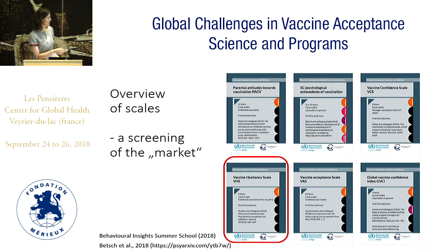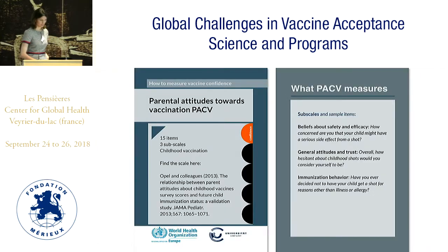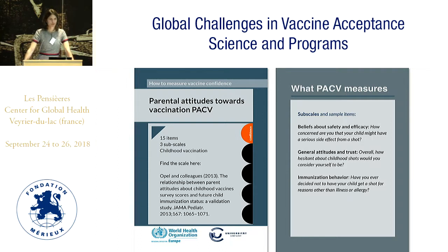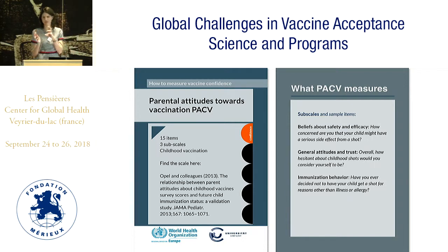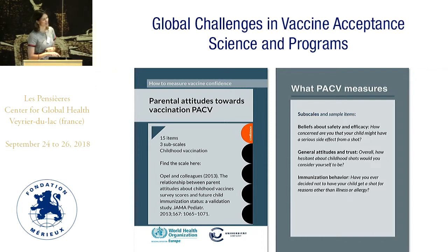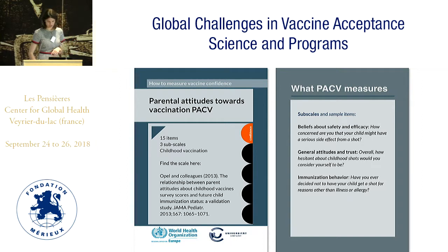One scale mentioned — Philip mentioned the PACV, the Parental Attitudes Toward Vaccination Scale. It has 15 items and measures the construct of confidence with three subscales: belief, attitude, and risk. It pertains mainly to childhood vaccination, and I think it's the oldest scale, so it's been used in lots of different works, and it also predicted actual behaviour.